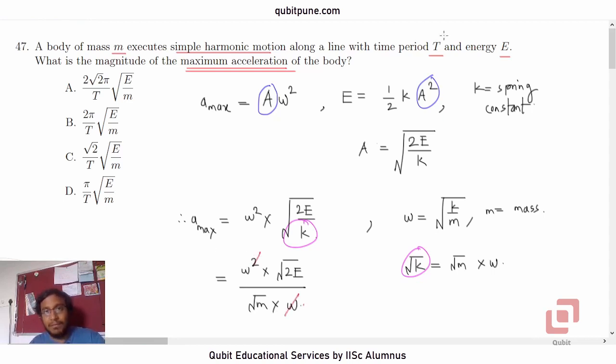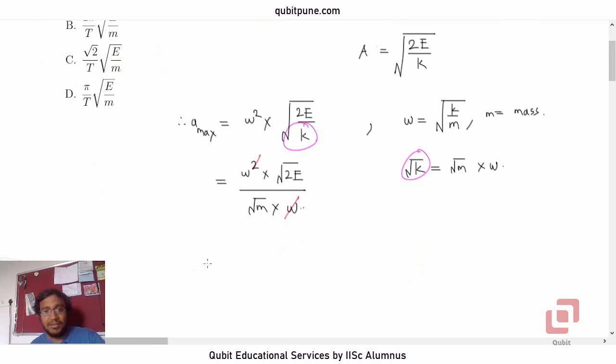Now, we do not actually have omega, we have time period T. So, what is the relation between them? Omega is 2 pi by T. So, on simplifying this, this omega will become 2 pi by T. And inside the root, we will have 2E by M. So, what will the constant be? The constant will be 2 root 2. Root E by M into 1 upon T is there in all the options.